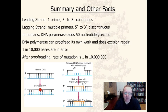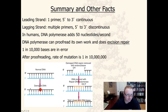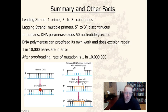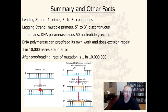DNA polymerase can proofread its own work, and when it finds a mistake, it performs excision repair. Endonuclease enzymes remove the damaged or mismatched section, another DNA polymerase adds the appropriate bases, and DNA ligase fuses the nick in the sugar-phosphate backbone. After excision repair, the rate of mutation drops to 1 in 10 million, making excision repair very effective at maintaining high-fidelity replication.